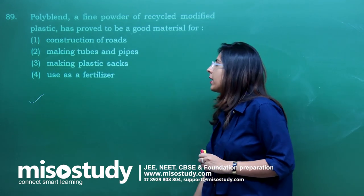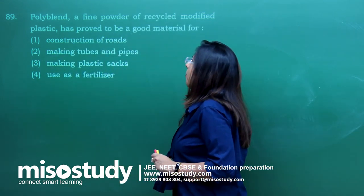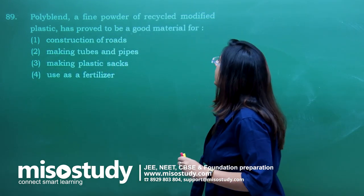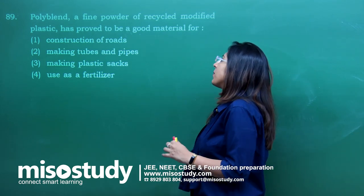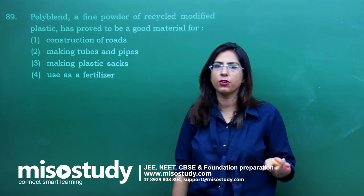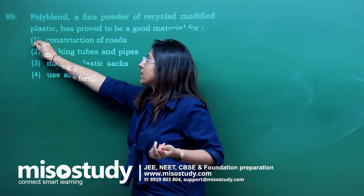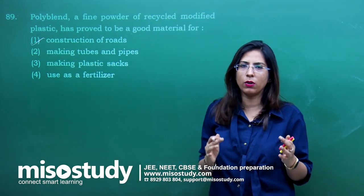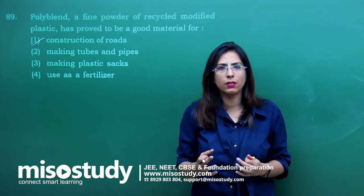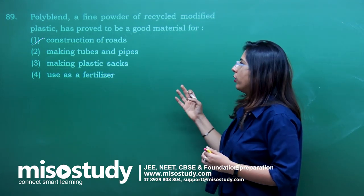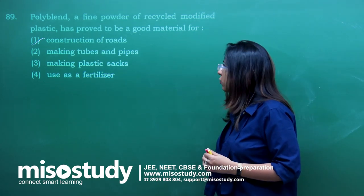Question number 89 — polyblend, a powder of recycled modified plastic, has proved to be a great material for construction of roads. The first option is correct and this revolutionary work was done by Ahmed Khan. The correct answer is option 1.